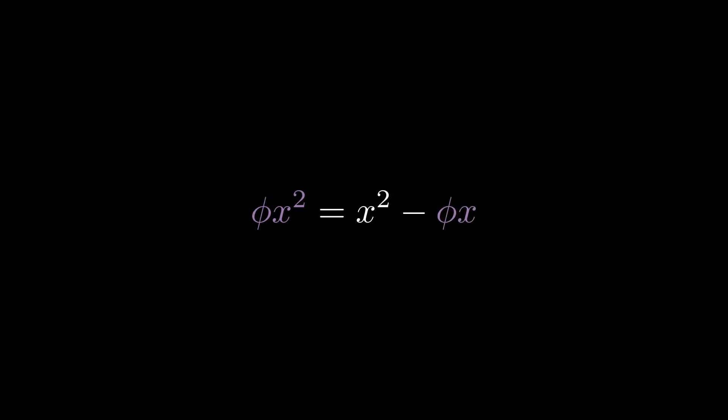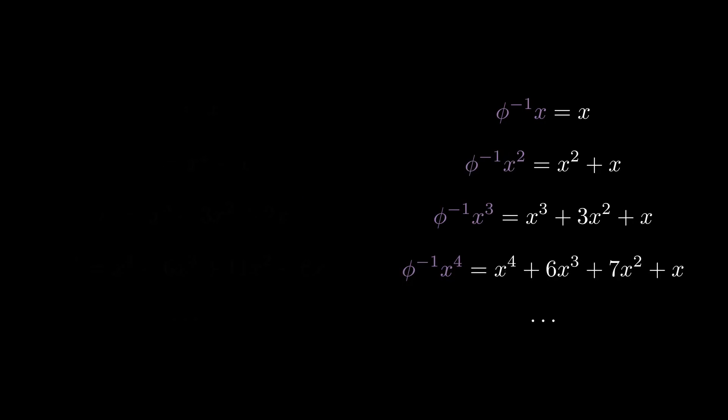And then, after isolating the x squared term, we can multiply through by phi inverse. Using this method, we can find the phi and phi inverse of any polynomial.